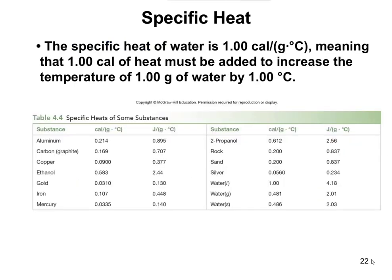Let's look at some examples of specific heat. You don't need to memorize this table — if I give you a problem on your test, you'll be given the actual specific heats. Aluminum, like your car, is 0.2 calories per gram degree Celsius. Sand is also 0.2 calories per gram degree Celsius, so both are very similar. Water comes in at 1 calorie per gram degree Celsius — about 5 times higher — which is why water doesn't get as hot as those other substances.